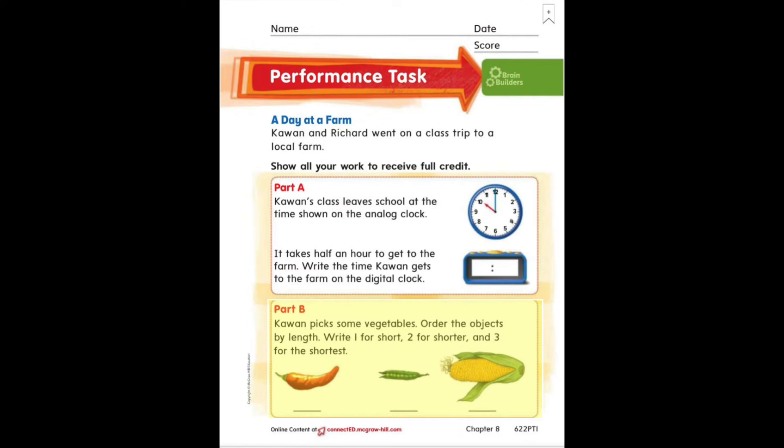Part B says Kawan picks some vegetables. That means the longest object you see first graders will have the number one below it. Again, feel free to pause the video and work before you move on.